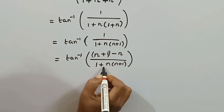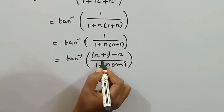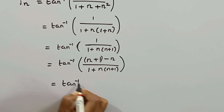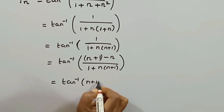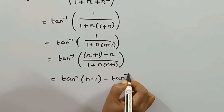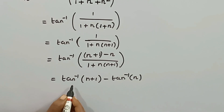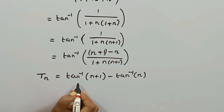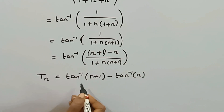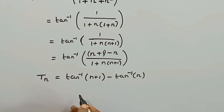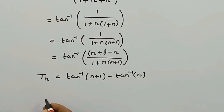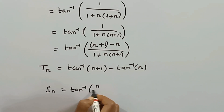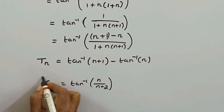We apply the same formula: tan inverse of a minus b divided by 1 plus ab equals tan inverse of a minus tan inverse of b, where a equals n plus 1 and b equals n. So Tn equals tan inverse of n plus 1 minus tan inverse of n. Following the same telescoping procedure as the previous problem, the sum Sn equals tan inverse of n plus 1 minus tan inverse of 1.